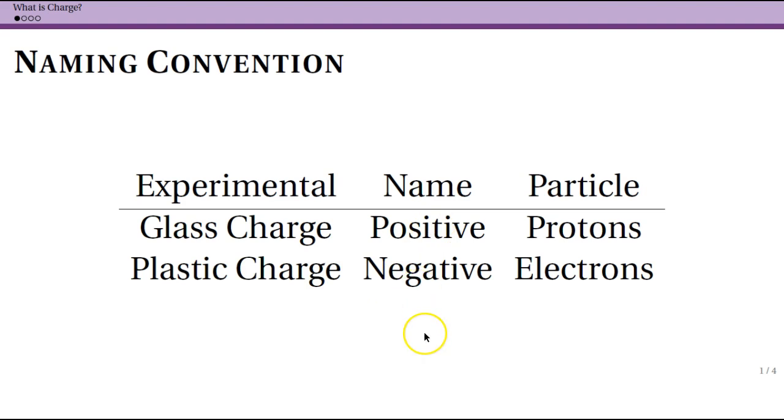Now there could have been a third option. For instance, we could have called this red, green, blue. But there isn't a third option simply because we've never found it. We've never found a third material that would attract both plastic and glass if it's charged.